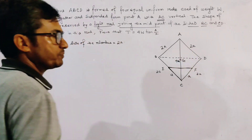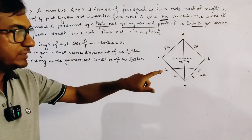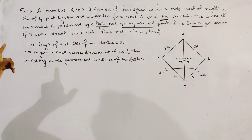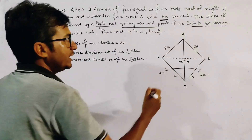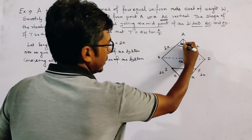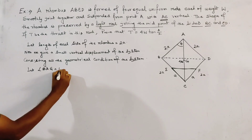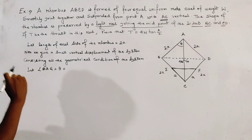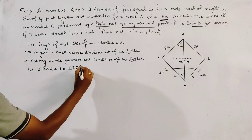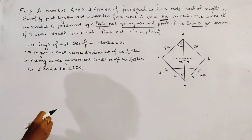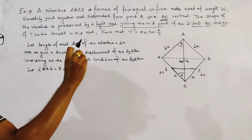We give a small virtual displacement to the rhombus such that all geometrical conditions are satisfied. At any position, let angle BAG equal theta. This angle also equals angle ECG, as seen from the picture.